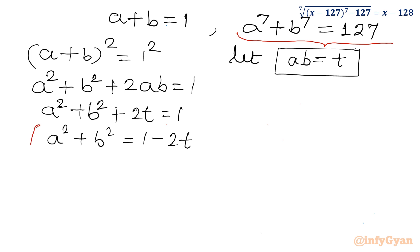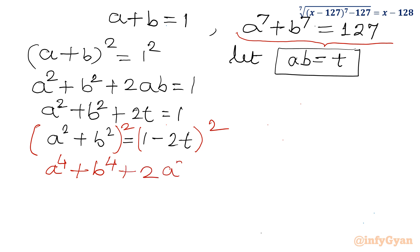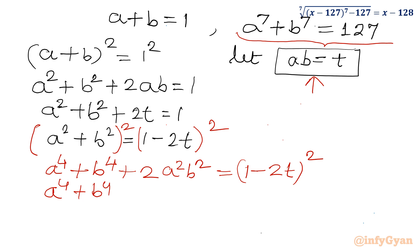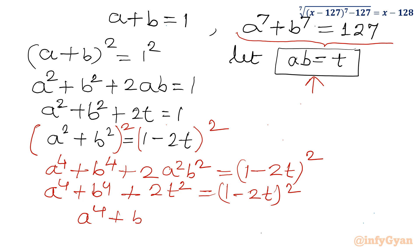So I will consider squaring once again. Squaring a square plus b square: it gives us a power 4 plus b power 4 plus 2a square b square equal to (1 minus 2t) whole square. Since ab equals t, a square b square will be t square. So a power 4 plus b power 4 plus 2t square equals (1 minus 2t) whole square, or a power 4 plus b power 4 equals (1 minus 2t) whole square minus 2t square.